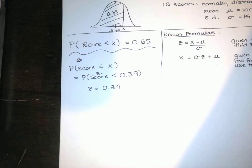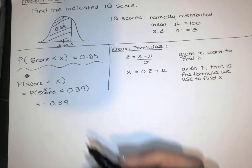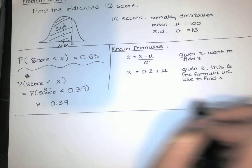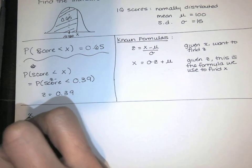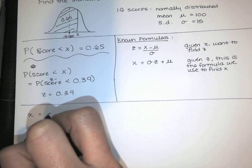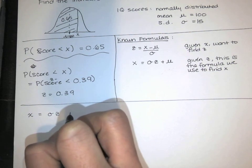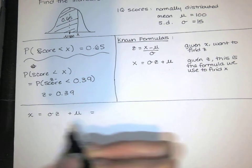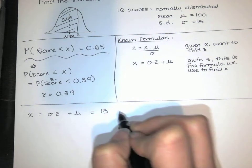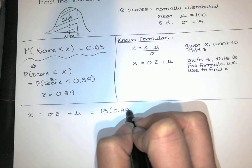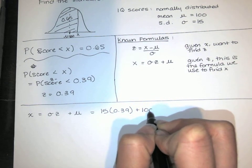So I'm going to zoom out a little bit. I'm going to go over to this known formula. My x value is the standard deviation times the z score plus the mean. So the standard deviation for IQs is 15, the z score is 0.39, and then I'm adding 100.